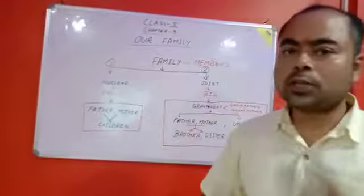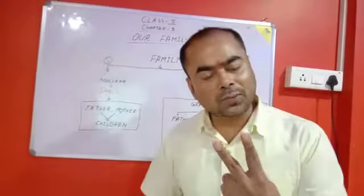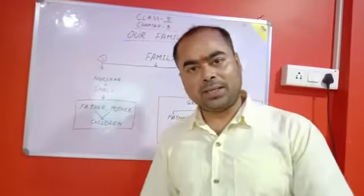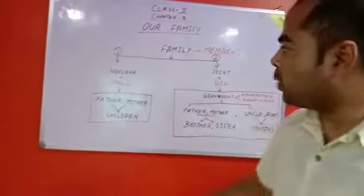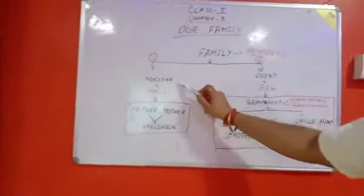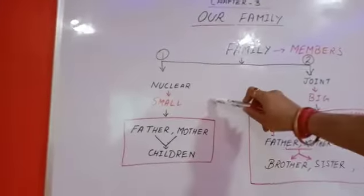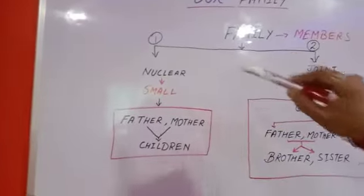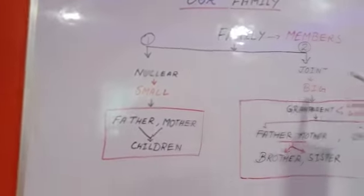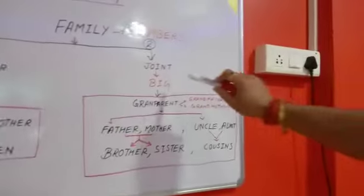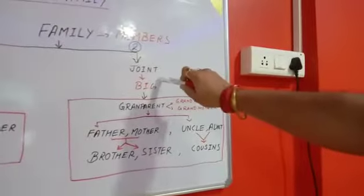Now there are two types of family. Number one is nuclear family, and the other one is joint family.